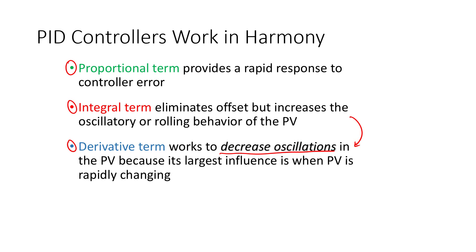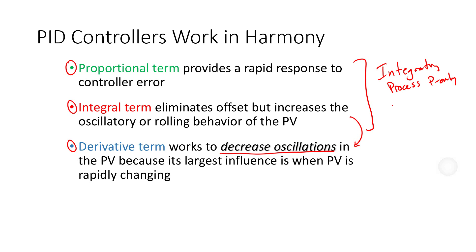There aren't many cases of proportional-derivative only controllers. Normally, if you have an integrating process, you implement a P-only controller. About 80% of controllers are PI controllers. But if you want to control oscillatory behavior, you use the full PID controller.